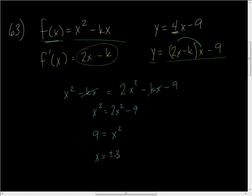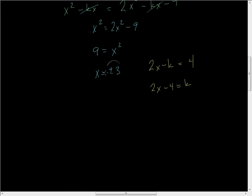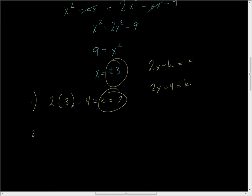Now that I have x, I can find k. I know the derivative 2x minus k equals the slope of the tangent line, which is 4. Solving for k: 2x minus 4 equals k. For x equals positive 3: 2 times 3 minus 4 equals 6 minus 4, which is k equals 2. For x equals negative 3: 2 times negative 3 minus 4 equals negative 6 minus 4, so k equals negative 10. Two solutions.